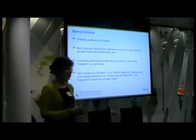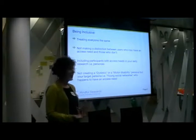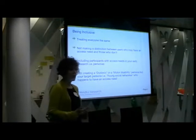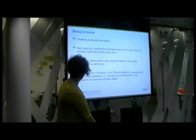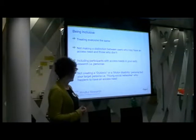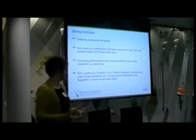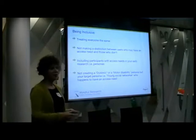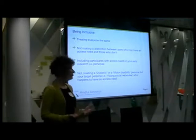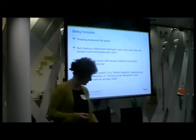It's looking purely on a needs basis and not defining people by saying you have to identify as having a disability, because a lot of people either don't want to or they don't know that they have a condition — there are many conditions that go undiagnosed. Being inclusive also means including participants very early on in your research. For example, personas — but not saying 'let's have a dyslexic persona,' because then you're putting them to one side. Whoever your persona is — say, a young social networker — they happen to have an access need.